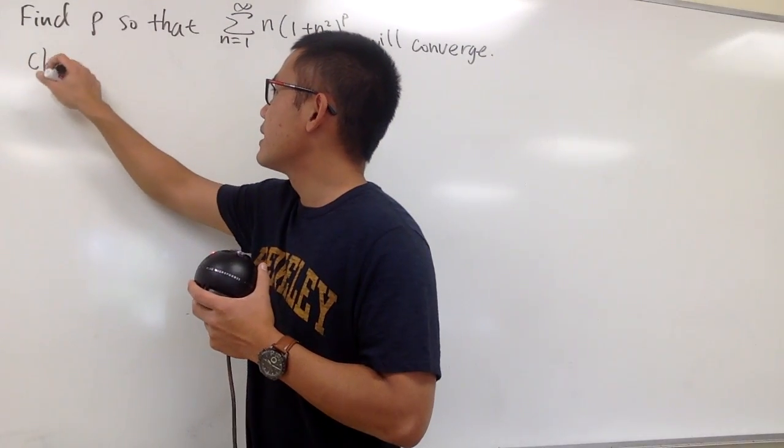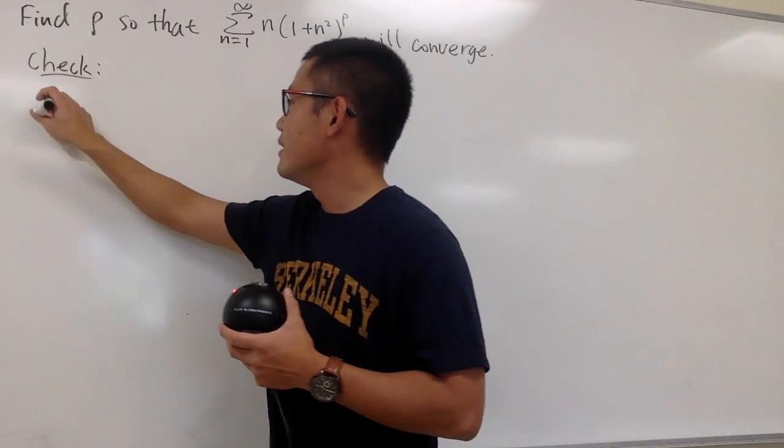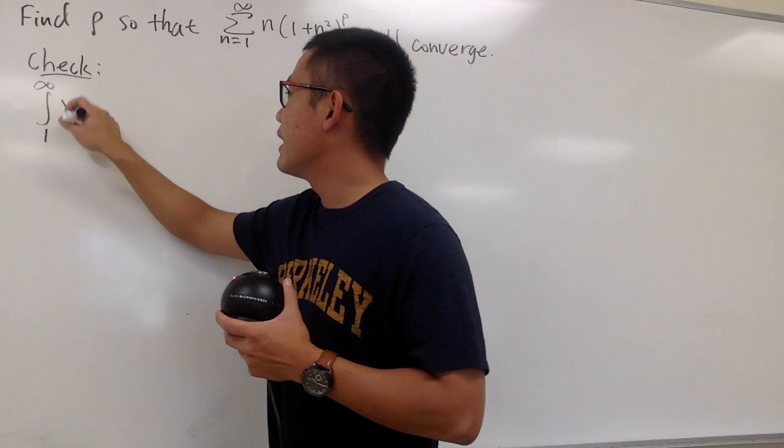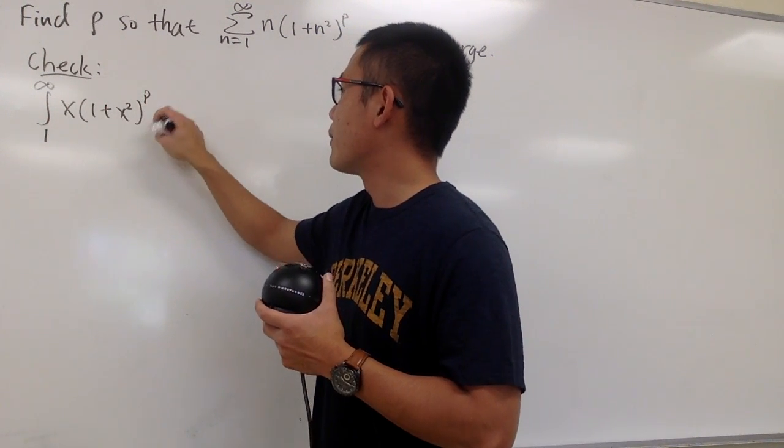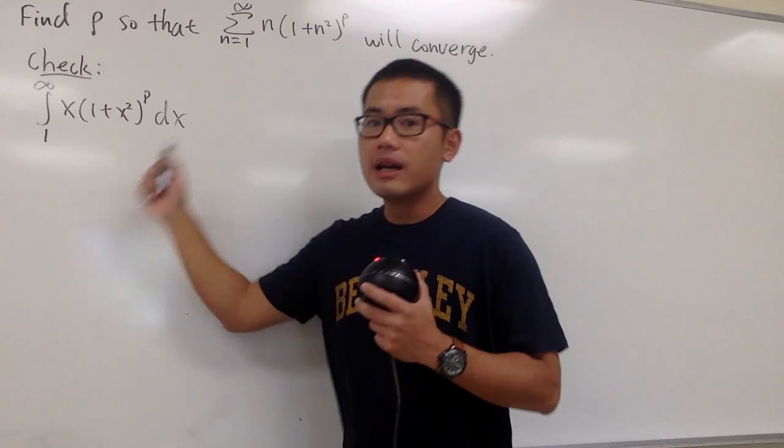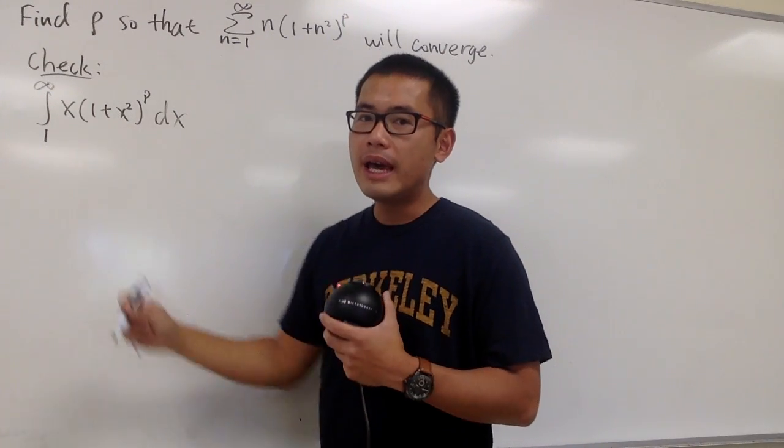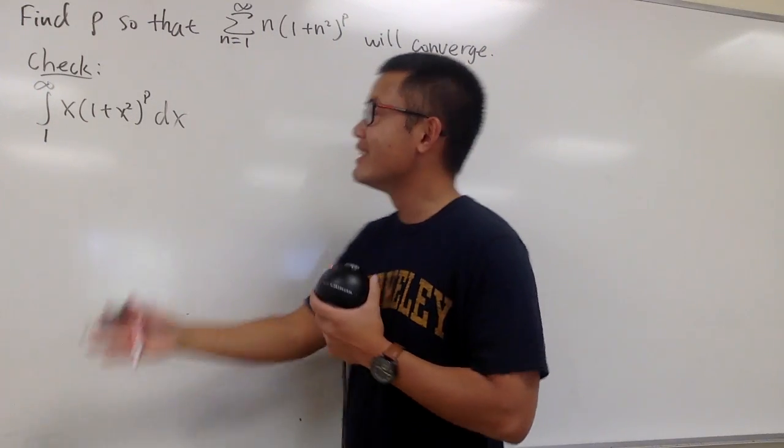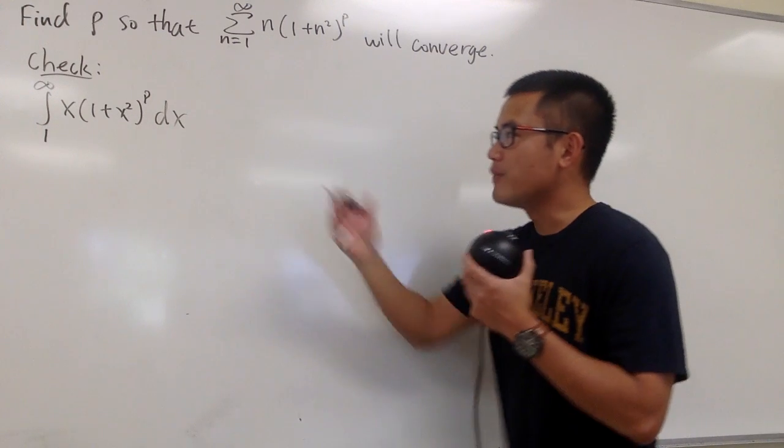This is what we're going to do. We are going to check, and I will convert this into an integral. That will be the integral from 1 to infinity, x times 1 plus x squared to the p's power dx. This is an improper integral, and if we can argue that this improper integral converges, then the infinite series will also converge. So let's focus on this.